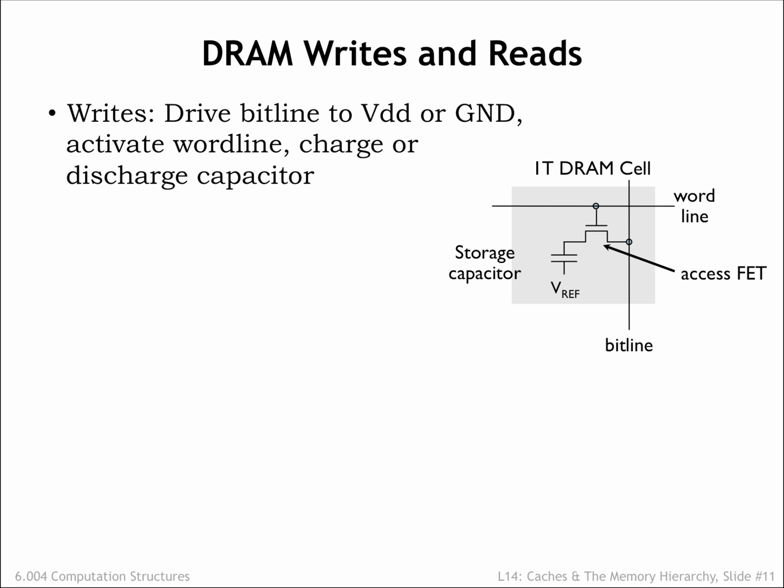DRAM write operations are straightforward: simply turn on the access FET with the word line and charge or discharge the storage capacitor through the bit line.